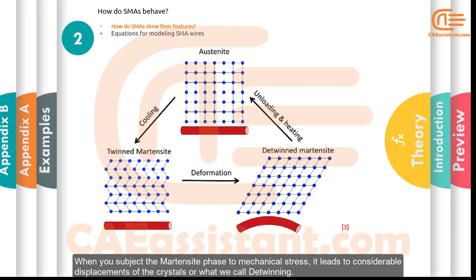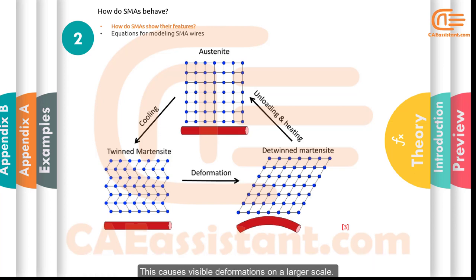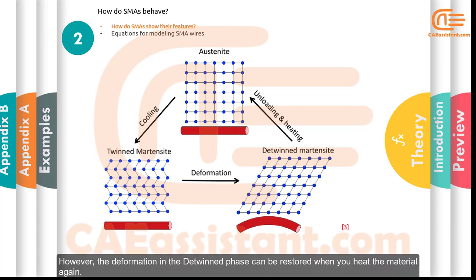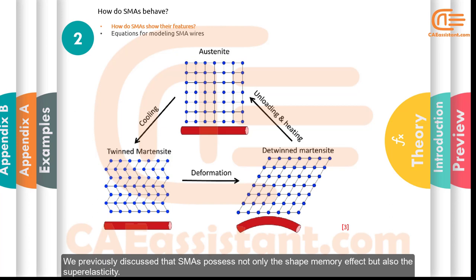When you subject the martensite phase to mechanical stress, it leads to considerable displacements of the crystals — what we call detwinning — causing visible deformations on a larger scale. However, the deformation in the detwinned phase can be restored when you heat the material again. In this case, the material transforms from detwinned martensite back to the austenite phase.